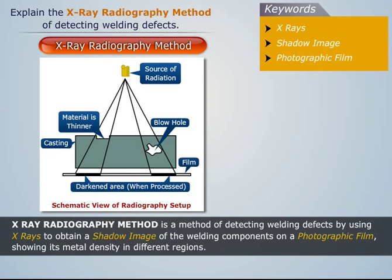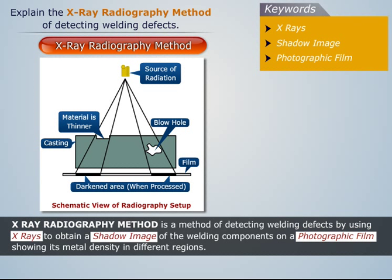Thus, X-ray radiography method is a method of detecting welding defects by using X-rays to obtain a shadow image of the welding components on a photographic film, showing its metal density in different regions.